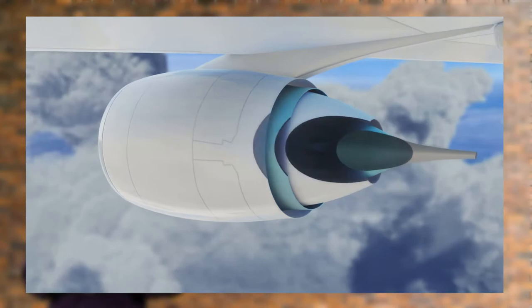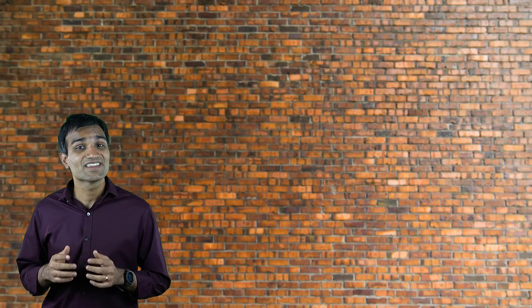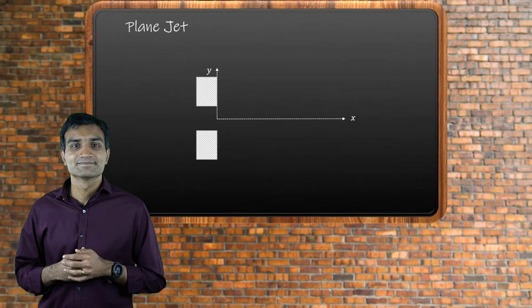In the case of an automobile exhaust, these calculations are necessary to meet emission standards. Jets are flows exiting a confined source into the ambient environment. This planar jet is exiting from an opening whose dimension is 2b0. As there are no walls, the jet continues to expand at constant pressure.